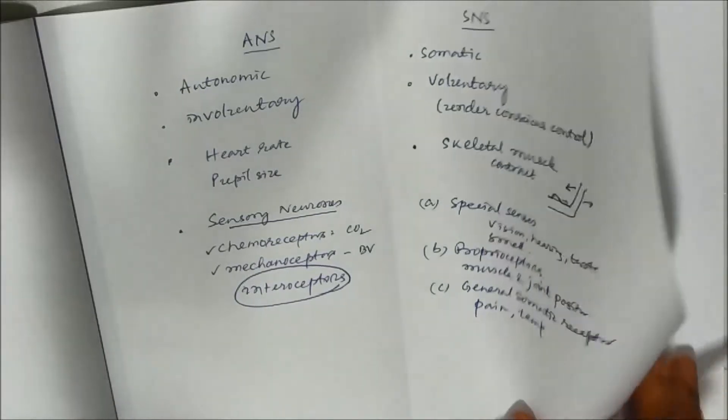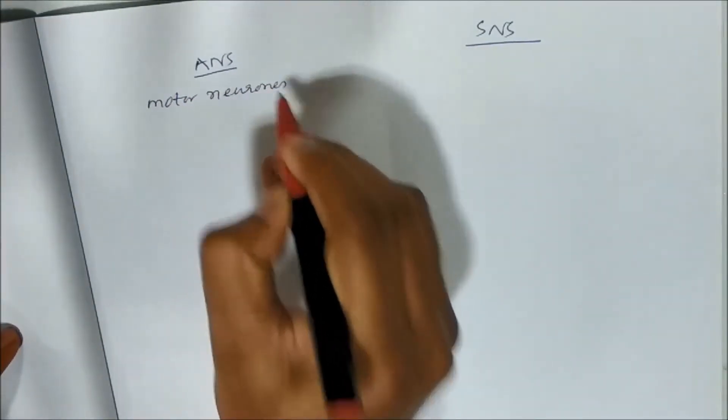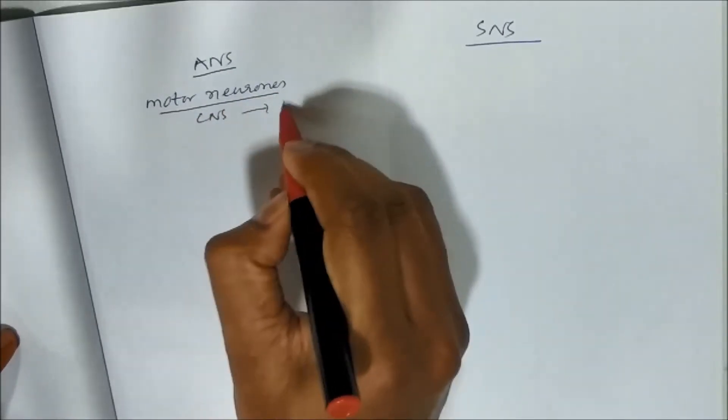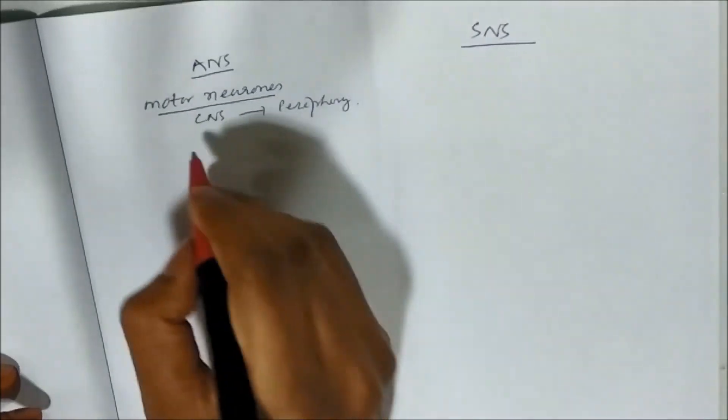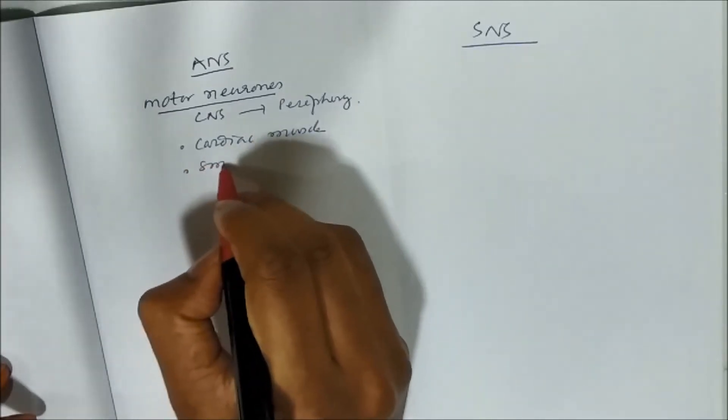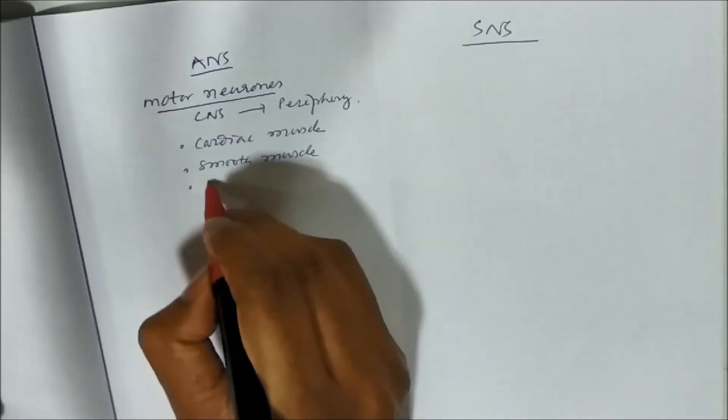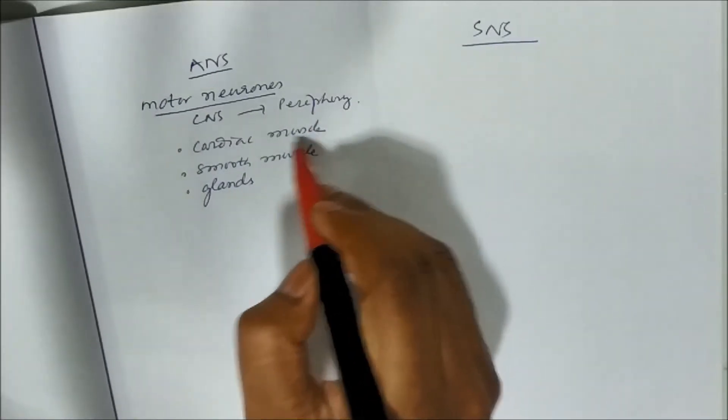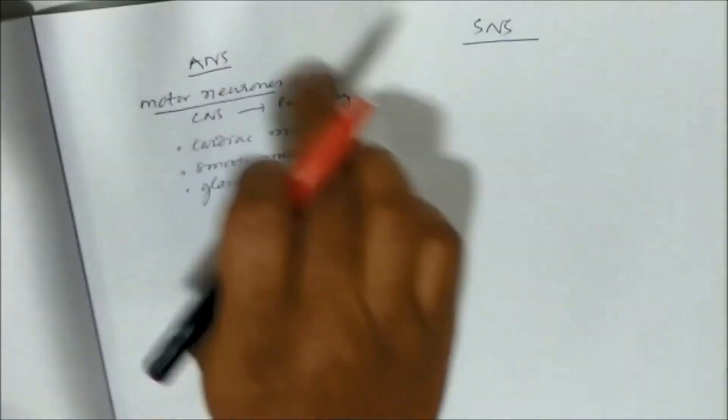And if we discuss the motor neurons in ANS and SNS. Sensory neurons we have discussed. The motor neurons. Motor neurons means the efferent neurons from CNS to periphery. And motor neurons innervate, that means they go to cardiac muscle, that is heart, smooth muscle, that is for example blood vessel, then glands. So cardiac muscle contraction, relaxation, smooth muscle contraction, relaxation, glands secretion or no secretion. All these are conducted by ANS.